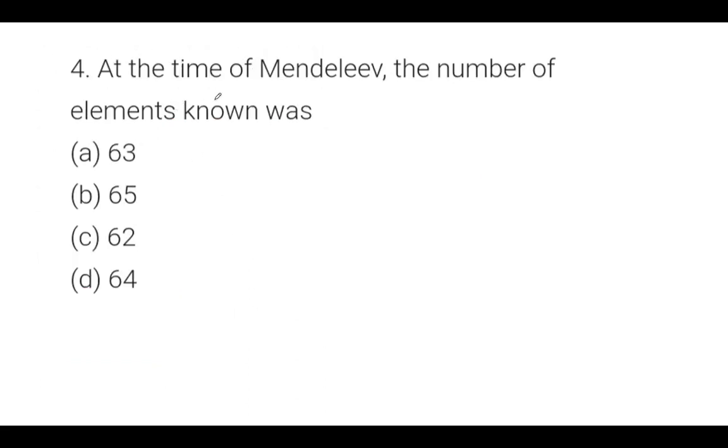Next question: At the time of Mendeleev, the number of elements known was? This is a very important question. I told you that when Newland gave his octaves, there were 56 elements known. But when Mendeleev gave his periodic table, there were 63 elements known. Dimitri Ivanovich Mendeleev arranged 63 elements.